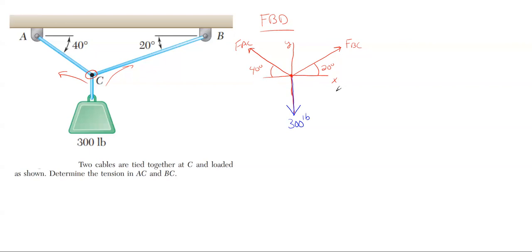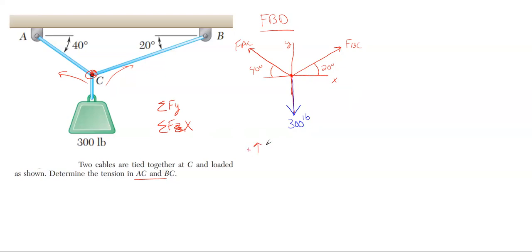This is our completed free body diagram. We really don't need the original picture anymore - we can just use our free body diagram. The only two unknowns are AC and BC, which are what we're tasked with finding. With equilibrium problems, after drawing your free body diagram with all angles, forces, and unknowns, your best next step is to write your summation equations. For this 2D problem about a single point, we only have summation in the y and summation in the x direction.